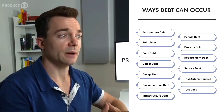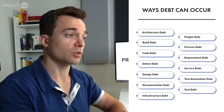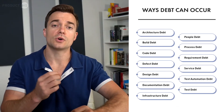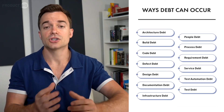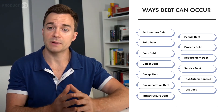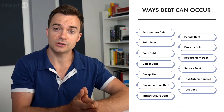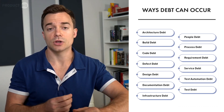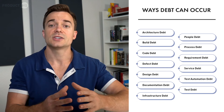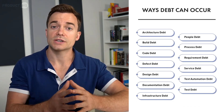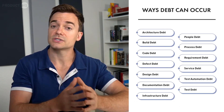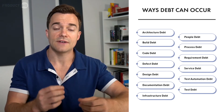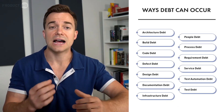The tenth is requirement debt, which comes about because of trade-offs made with respect to the requirements the development team needs to implement — for example, requirements that are only partially implemented. Service debt refers to the debt incurred by the need for web service substitution, which can be driven by both business and technical objectives. Test automation debt is the work needed to automate tests of previously developed functionality to support continuous integration and faster development cycles.